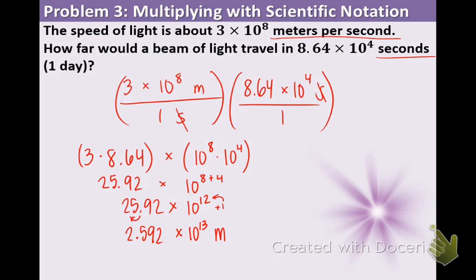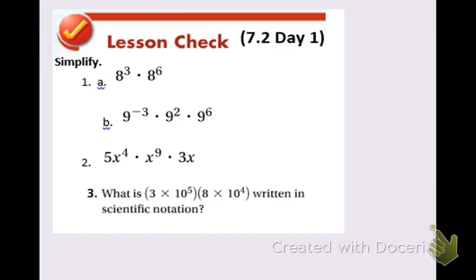We have our answer. 2.592 times 10 to the 13th meters. That is how far a beam of light would travel in one day. That concludes day 1 portion, so please try the lesson check. Make sure you have completed 7.1 lesson check, and we will go through some of these problems together tomorrow.